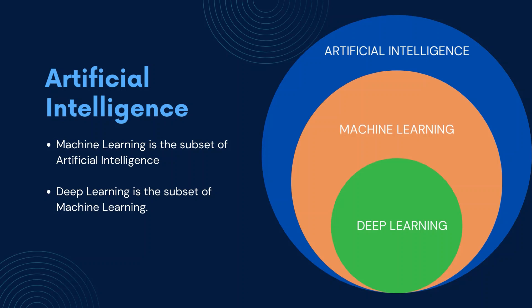Whenever I say subfield or subset, that means artificial intelligence is not just limited to machine learning. Other than machine learning, there are many aspects that artificial intelligence can do. Similarly, machine learning is not just deep learning — deep learning is some part of machine learning, but there are other things in machine learning as well. One more misinterpretation is that machine learning is sometimes understood as the advanced version of artificial intelligence, and deep learning as the advanced version of machine learning.